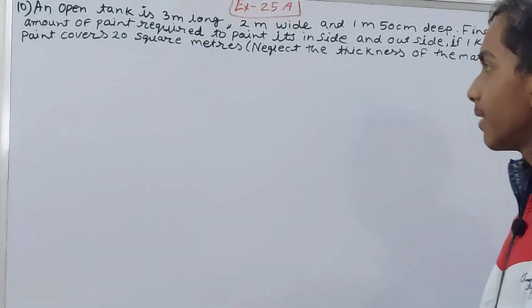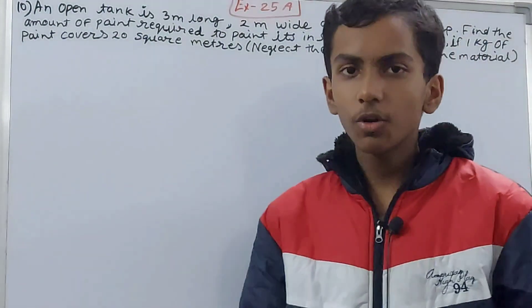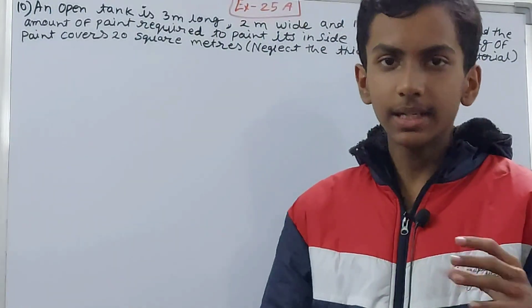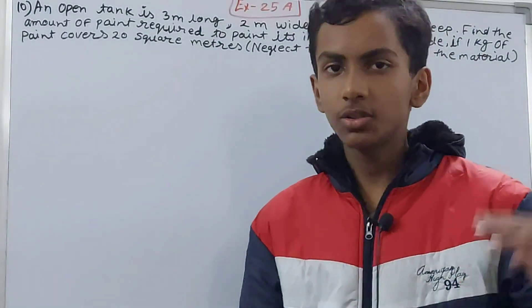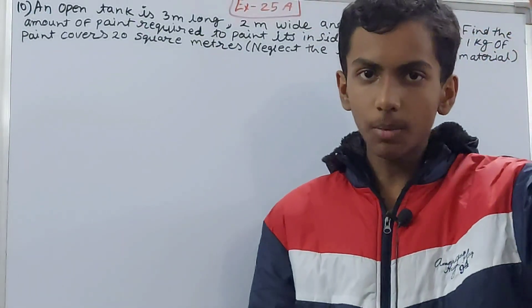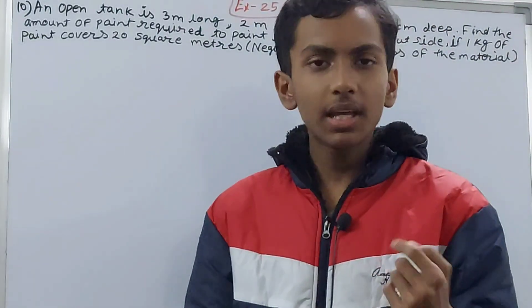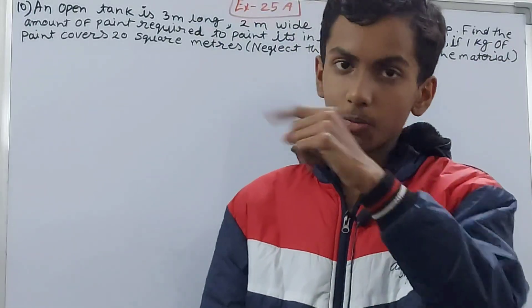If 1 kilogram of paint covers 20 square meters. So there is an open tank. Open tank means you have seen tanks that are in the shape of cuboids. The open tank is the tank that is not having the ceiling, the top, the roof - it is missing. So what we have is four sides and one floor.